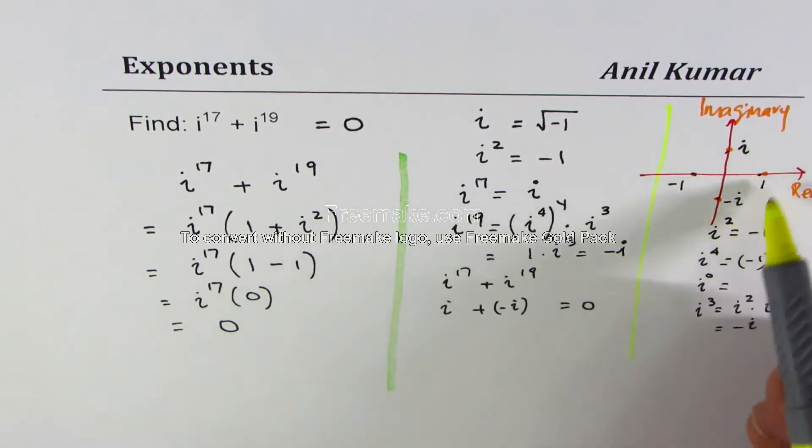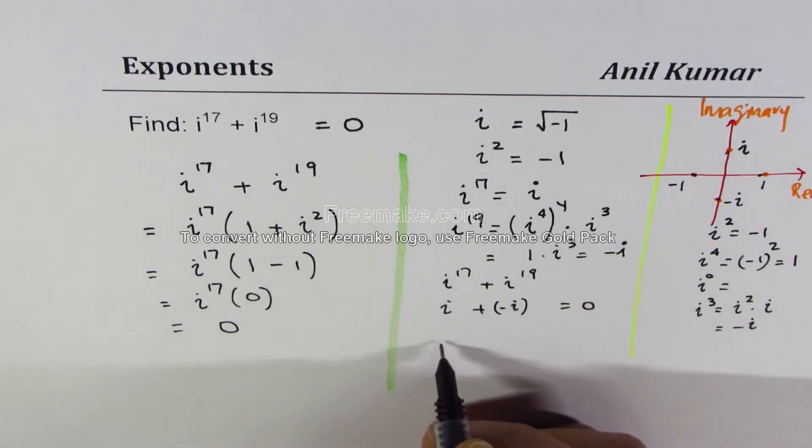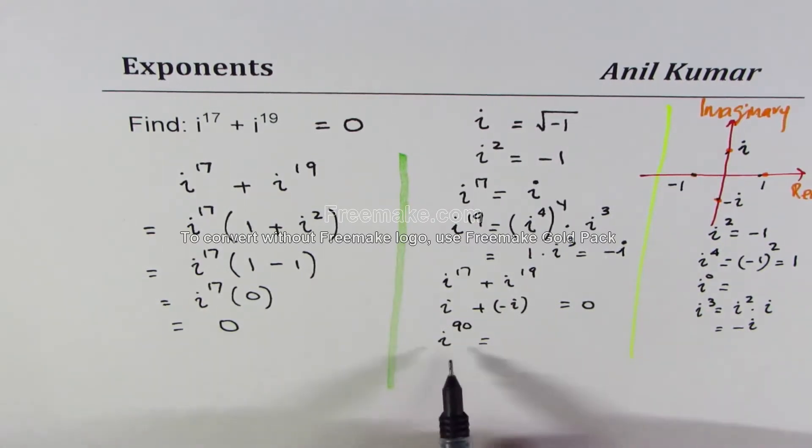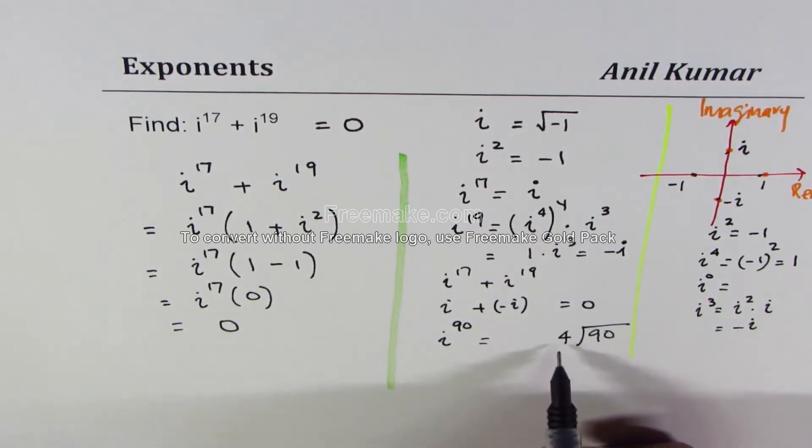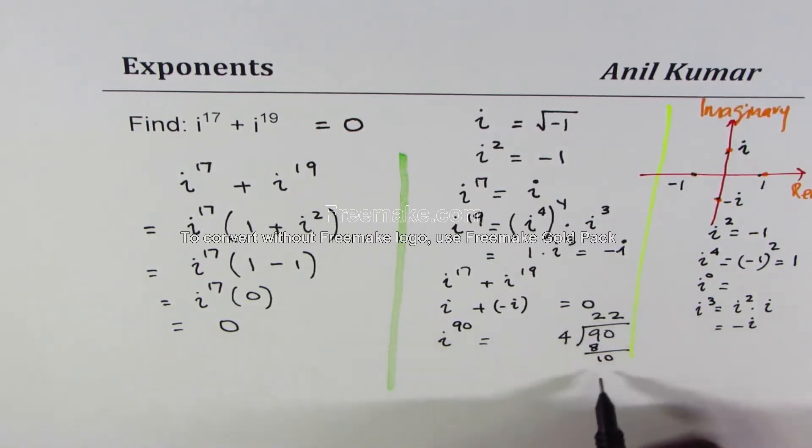Let me add one more thing here. Let us say if I want to find i to the power of 90, how much will it be? The best thing is divide 90 by 4. So now it could be 2 times 8 you get 10 and then again 2 times 8 and you get remainder of 2.